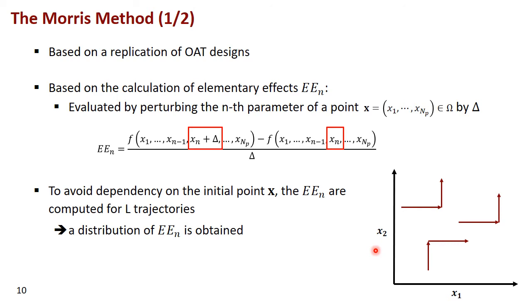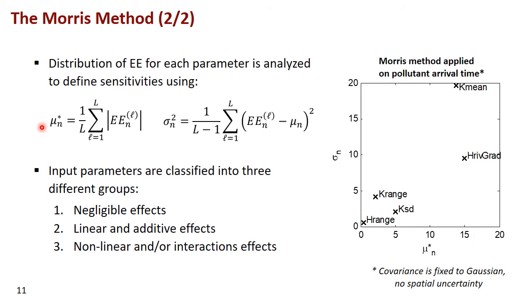An extension to address at least the base case issue is the Morris method. It extends the OAT design by evaluating what are called elementary effects. An elementary effect is basically perturbing a parameter, keeping the other parameters fixed, and calculating a sort of derivative. Then, to avoid dependency on the starting point, this is repeated for a number of initial points. From these many elementary effects, we calculate the mean elementary effect and the variance of the elementary effect, as given by these two equations.